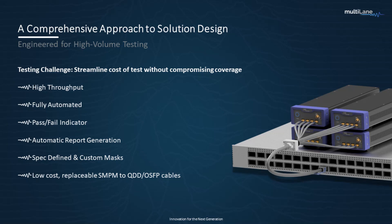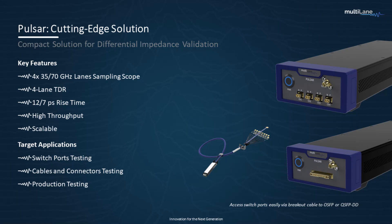Let's have a quick look at the instrument proper. Pulsar is a four-lane scope NTDR available in 35 and 70 gigahertz bandwidth. 35 or 70 gigahertz bandwidth brings us down to 12 or 7 picosecond rise time respectively. And to keep things moving fast, we have scaled down testing time to a few seconds, which makes Pulsar a high-throughput scalable instrument.